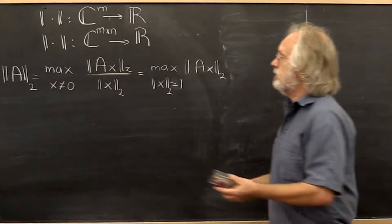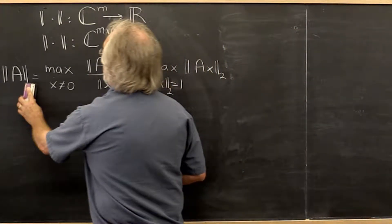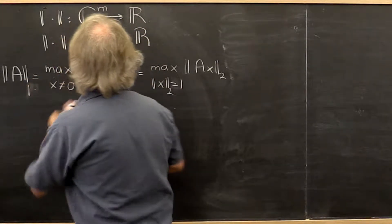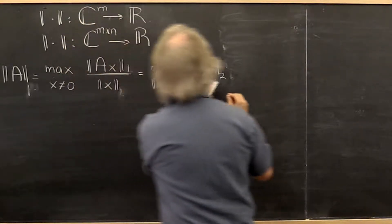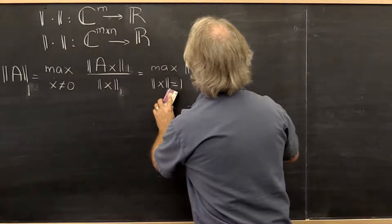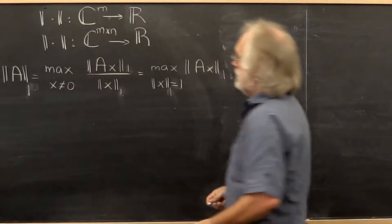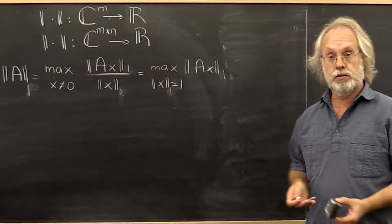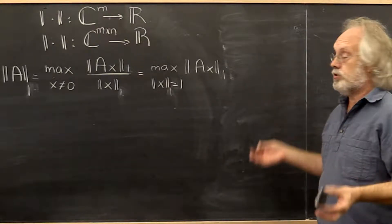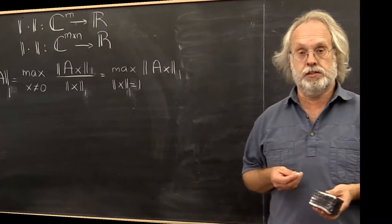So moving right along, you can similarly define the matrix 1 norm. And you might say, well, that's just as hard to evaluate as the matrix 2 norm. I don't see the difference.